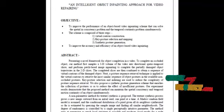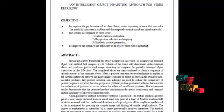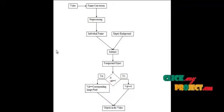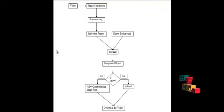Finally, they are concatenated so that we get the foreground objects present in the video — the exact foreground objects from the input video. Let me now explain the flow of the process for this intelligent object inpainting approach for video repairing.